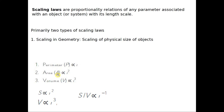Area will be proportional to the square of the length — if I reduce the length by a factor of 10, the area reduces by a factor of 100. What happens to volume? Volume has three dimensions, so it will be proportional to the cube of the length scale. If I reduce the length by a factor of 10, then the volume reduces by 10 cubed, or 1000.